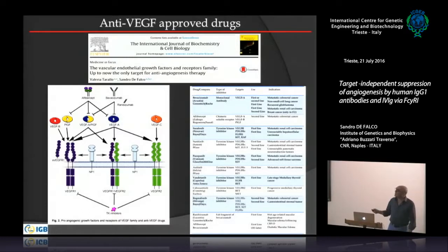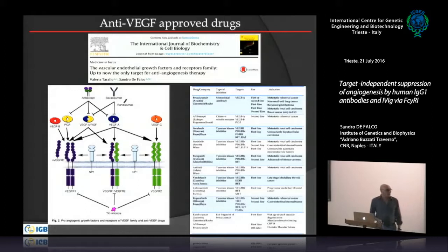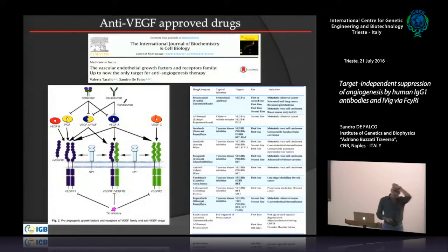There are also many TK inhibitors that block the receptors, though they are never specific. For example, anti-angiogenics have become first-line therapy for metastatic renal cell carcinoma and neuroendocrine tumors. Ranibizumab was developed for age-related macular degeneration, and aflibercept has also been approved for ocular neovascular disease, along with bevacizumab used off-label.